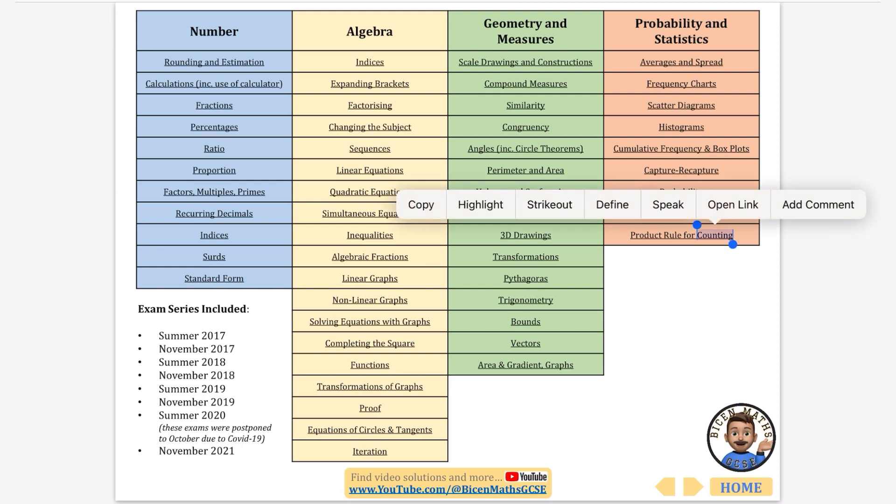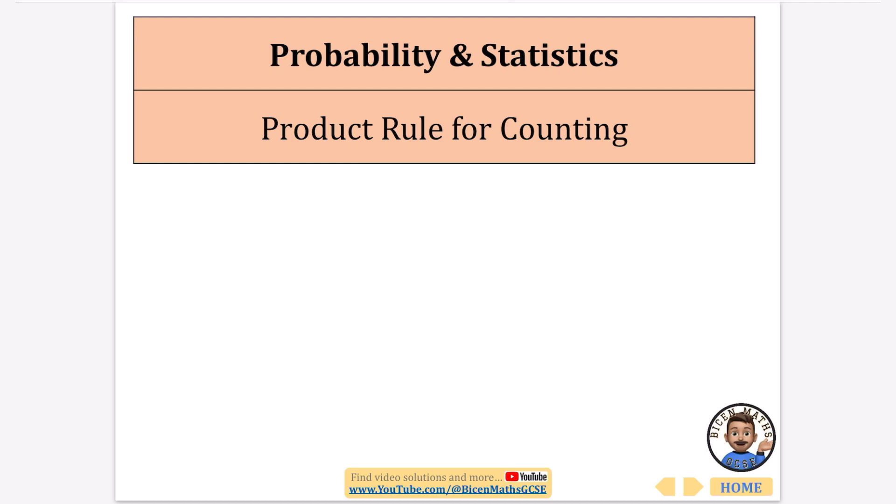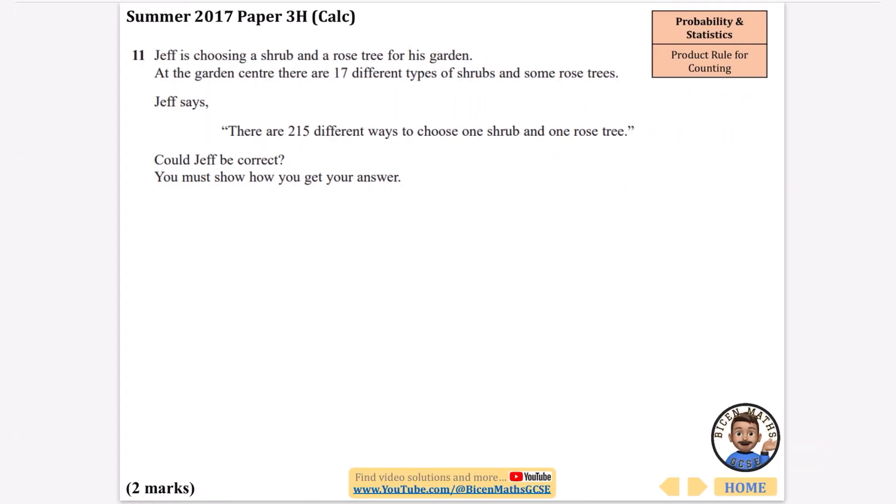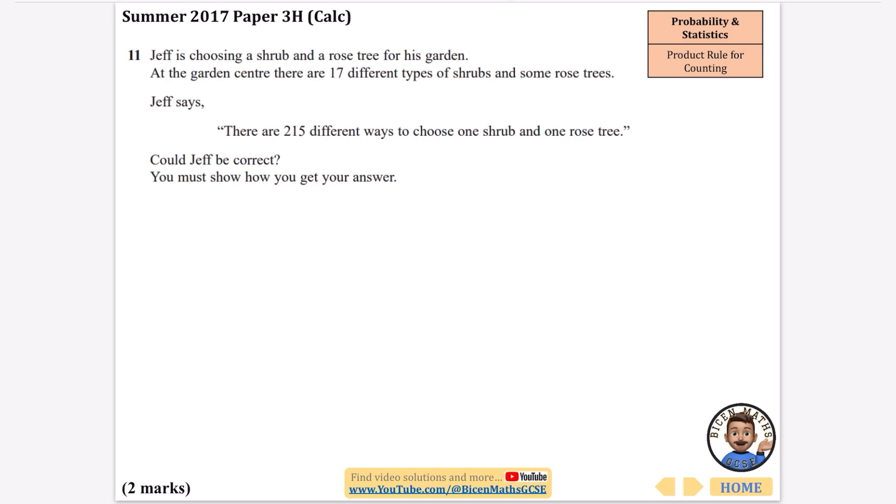Now the product rule for counting is where they want you to find out lots of different combinations of things. Like I always say in these videos, if you do want to use this document it is linked in the description for you.